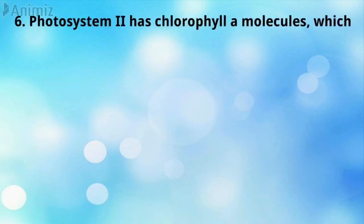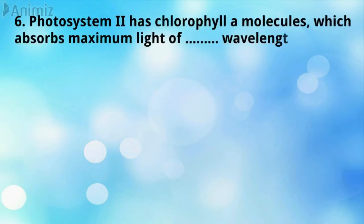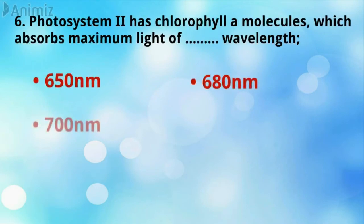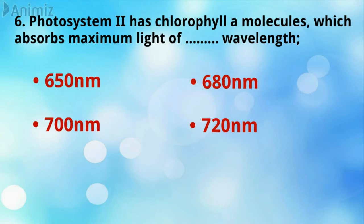Photosystem II has chlorophyll A molecules which absorb the maximum light of 680 nm wavelength.